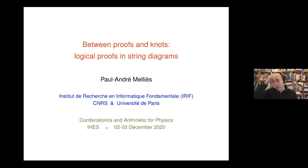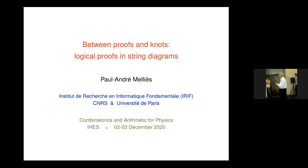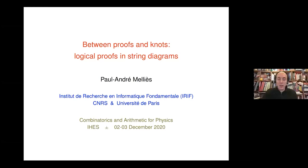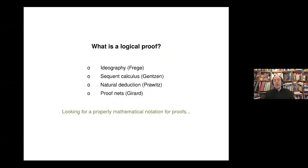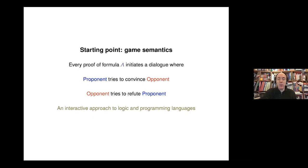I'm very grateful for this invitation to speak about this connection between proofs and knots. There is a lot to explore still, so I will explain the basic ideas. This picture summarizes the talk: it's about how a proof can be seen as some kind of knotty structure, which has to do with the structure of dialogue. It's a long question about what is a logical proof, how we should represent and describe it, and how we could have a proper mathematical notation for proofs.